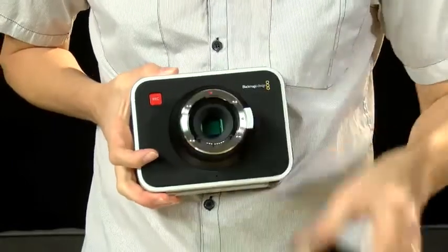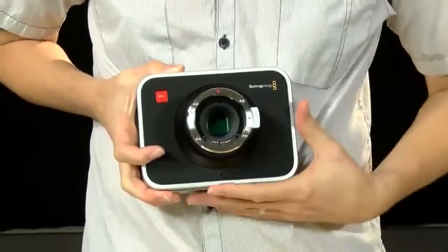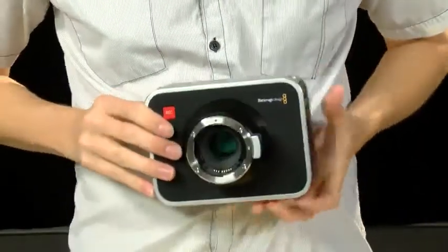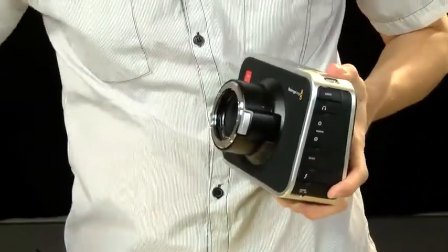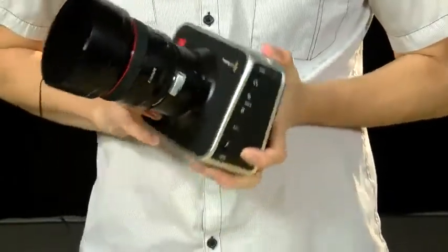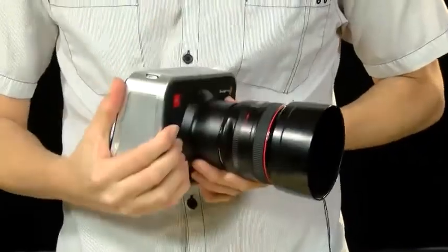And let's unscrew that and see. So there it is. This is the EF mount. It does come in a Micro Four Thirds mount, but this is the one that model that we're going to test. So I'm going to go ahead and put this lens on here. Clicks right on. Looks pretty good.